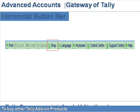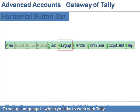S: Shop — to buy other Tally add-on products. G: Language — to set up the language in which you like to work with Tally.